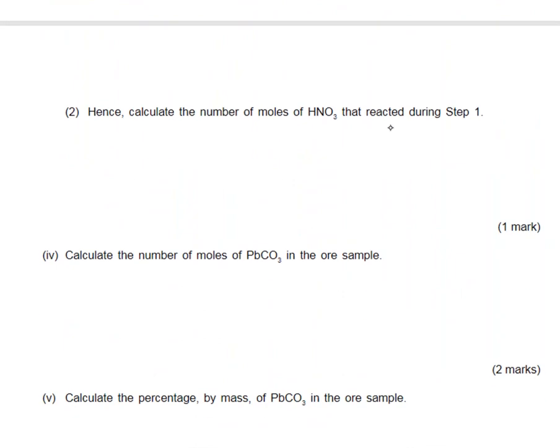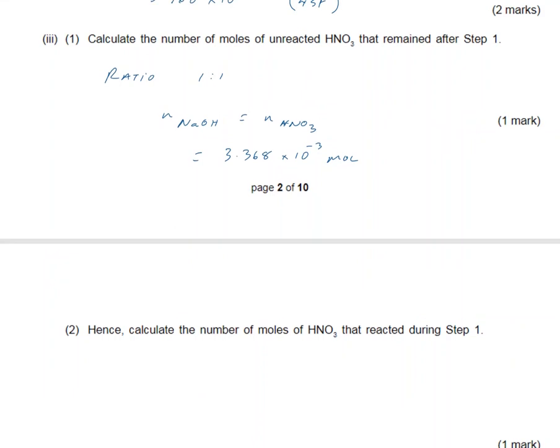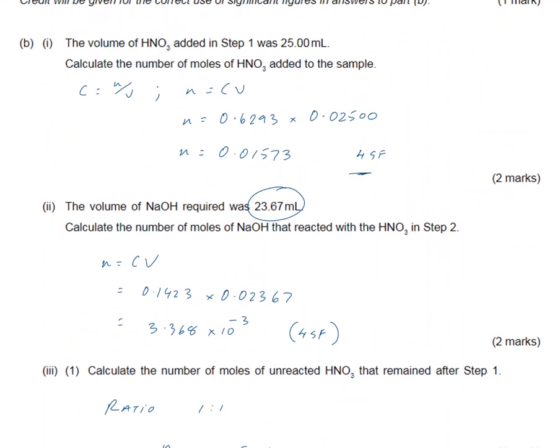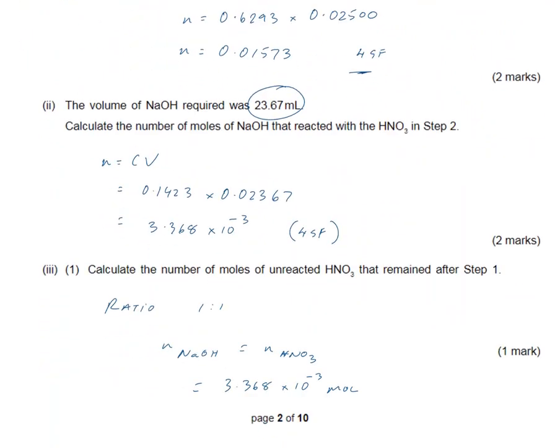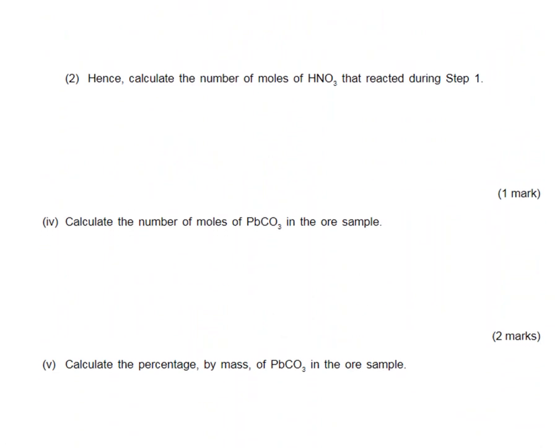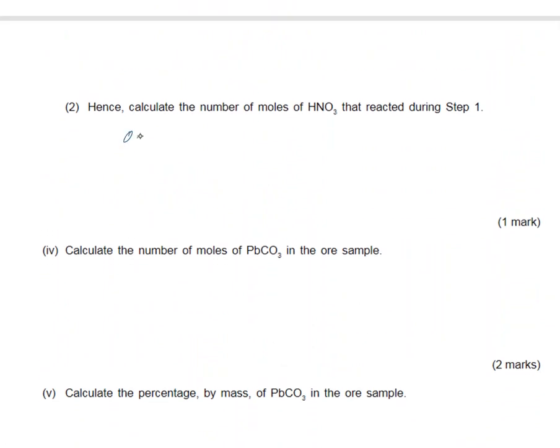Calculate the number of nitric acid that reacted during step one. We originally worked out the number of moles we had, and we've now just worked out the number of moles we have left over, so we do the subtraction: 0.0157325 minus 3.368 times 10 to the power minus 3. That gives us 0.01236426, and we're working in four sig figures, so the final answer is 0.01236.